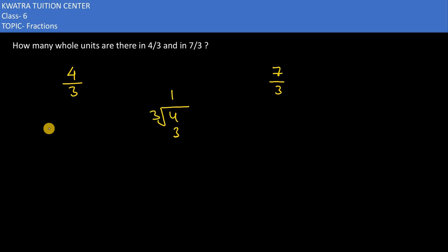1 will go, obviously 3 will come, and remainder would be 1. Now we can write this in mixed fraction form. 3 would remain at the denominator only, and I would have 1 and 1 here. Now we have to understand how many whole units are there.